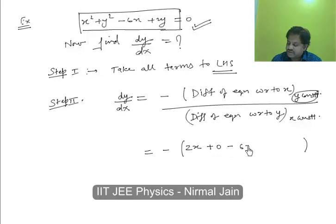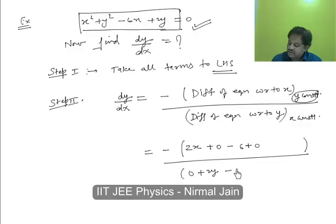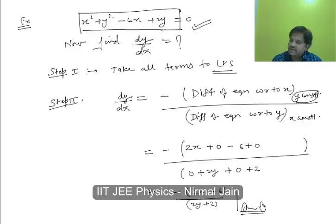Differentiation of 6x will become minus 6, plus 0. Now we take x to be constant, so its differentiation will become 0, plus differentiation of 2y with respect to y is 2, and differentiation of minus x will also become 0. So what we get here is dy/dx equals 2x minus 6, upon 2y plus 2. So that is the final answer in this case.